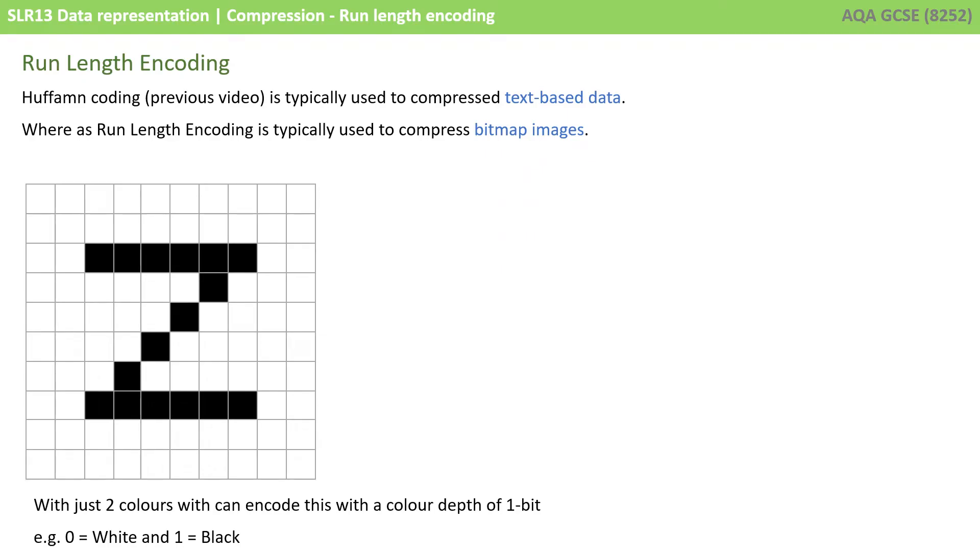Huffman coding that we looked at in the previous video is typically used to compress text-based data, whereas run length encoding is typically used to compress bitmap images.